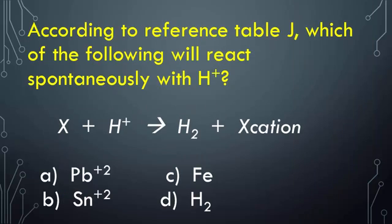According to reference Table J, which of the following will react spontaneously with a hydrogen ion? The answer is iron. The reason is because of all the possible choices, it is the one on the top of the list. Therefore, it is the most reactive and will be the one that reacts spontaneously.